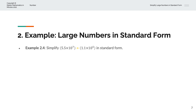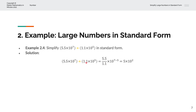In the fourth example, we're asked to simplify 5.5 times 10 to the power of 7 divided by 1.1 times 10 to the power of 5, and write the answer in standard form. We group 5.5 divided by 1.1 as 5.5 over 1.1, and group 10 to the power of 7 divided by 10 to the power of 5, which becomes 10 to the power of 7 minus 5. So 5.5 over 1.1 equals 5, and this becomes 10 to the power of 2. Here 5 is between 1 and 10, and 2 is a positive integer, so this is in standard form.